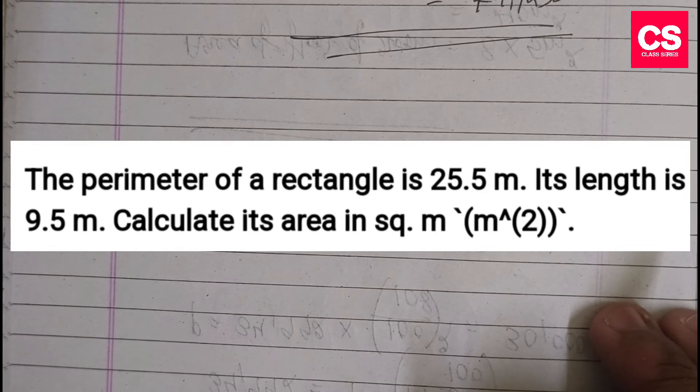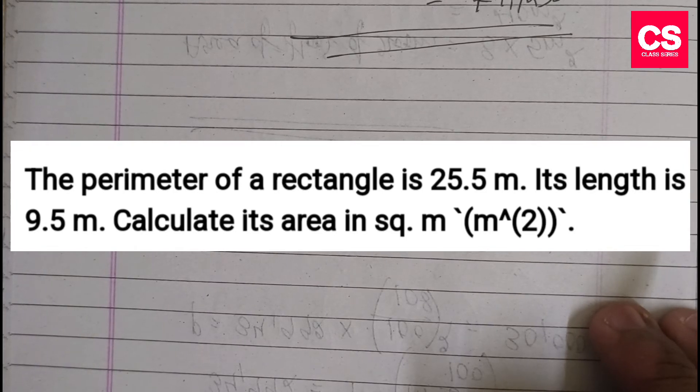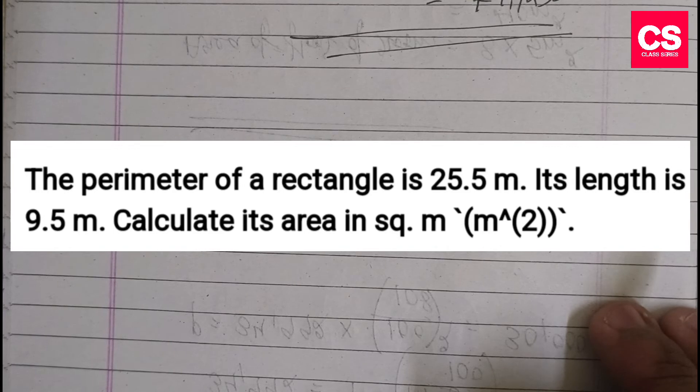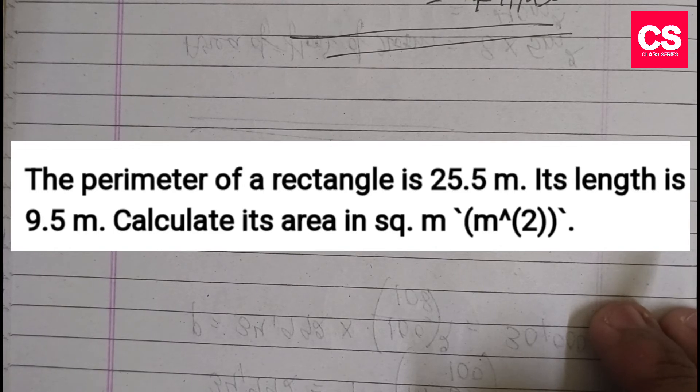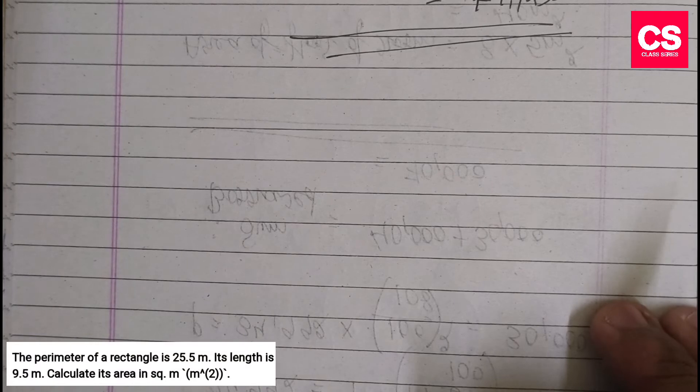The perimeter of a rectangle is 25.5 meters, its length is 9.5 meters. Calculate its area in square meters or meter square. So basically we'll use the formula with the given data.